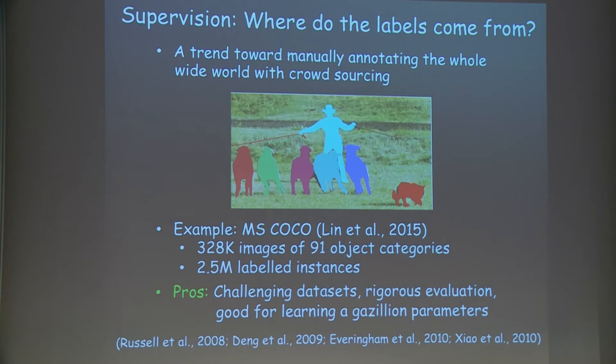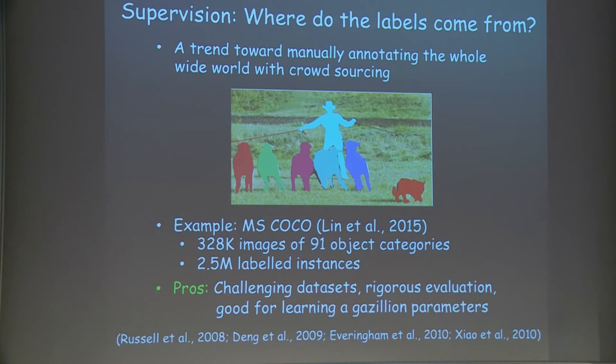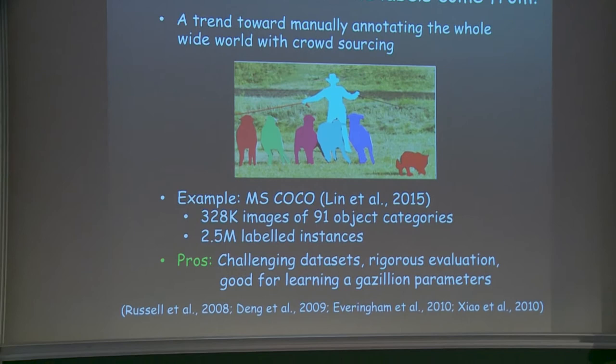Of course, providing labels is expensive. There's a trend in the computer vision community to label everything. This is an example from MS COCO — they asked people to label images and delineate all the objects of interest. If you gave me a mouse and a picture like that and asked me to delineate the objects of interest, it would take me about 20 minutes. And they did that for 400,000 pictures.